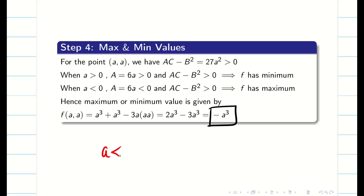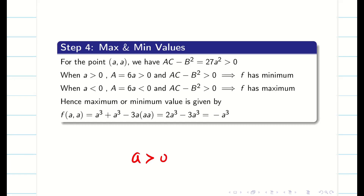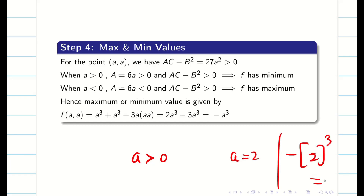To clarify with examples: if a = minus 2, then minus a³ = minus(minus 2)³ = 8, which is the maximum value. If a = 2, then minus a³ = minus 8, which is the minimum value. In general, the maximum or minimum value is minus a³ depending on the sign of a.